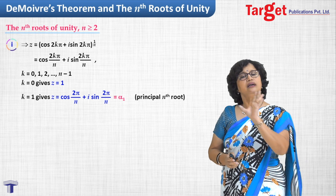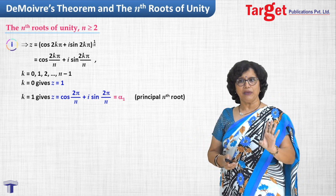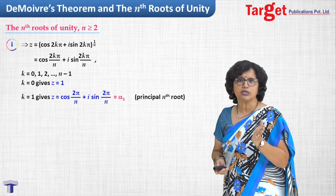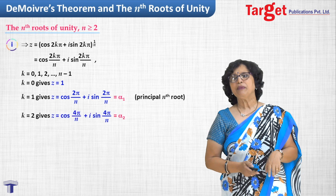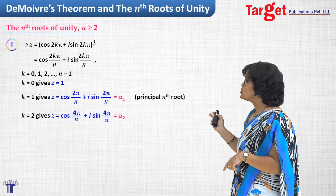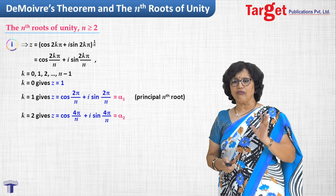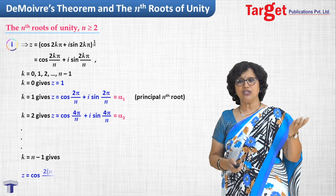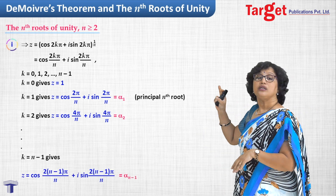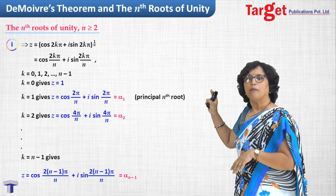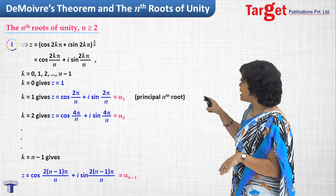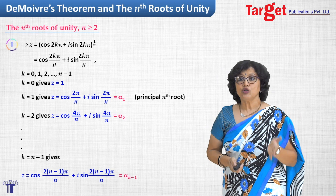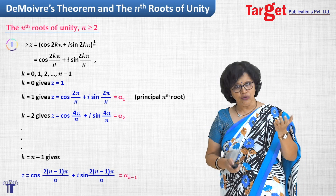k = 0 gives z = 1. k = 1 gives z = cos(2*pi/n) + i*sin(2*pi/n), which is called alpha_1, also known as the principal root. k = 2 gives cos(4*pi/n) + i*sin(4*pi/n), named alpha_2, and so on. Continuing up to k = n-1 gives cos(2(n-1)*pi/n) + i*sin(2(n-1)*pi/n), which is alpha_(n-1). In this way we obtain all n nth roots of unity.